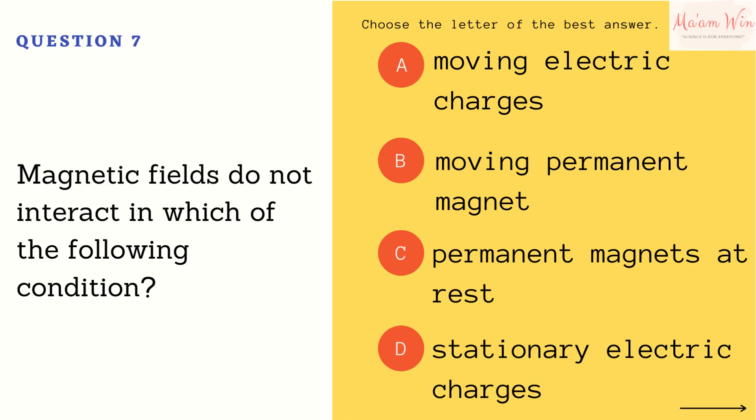Question number seven: magnetic fields do not interact in which of the following conditions? Letter A, moving electric charges. Letter B, moving permanent magnet. Letter C, permanent magnets at rest. Letter D, stationary electric charges. Choose the letter of the best answer.